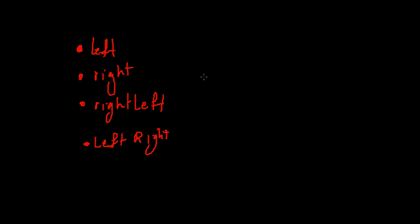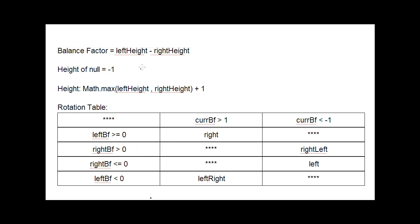For these rotations, we need to keep track of two things: balance factor and height. Balance factor is defined as left height minus right height. Height of a null node is defined to be negative 1, and height of anything else is the maximum between left and right height plus 1. I also have the rotation table here, which is the most important thing in the AVL tree subject — it's a good idea to write it down for later reference.